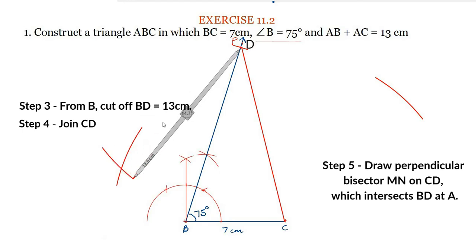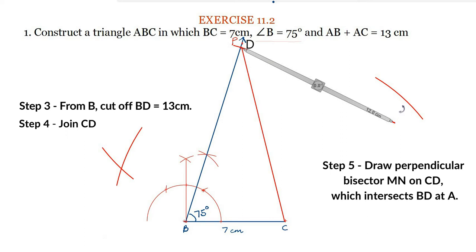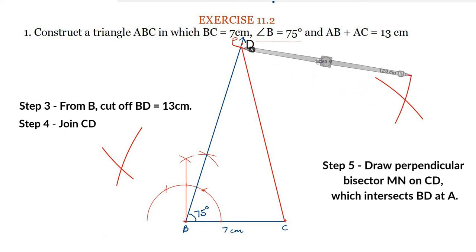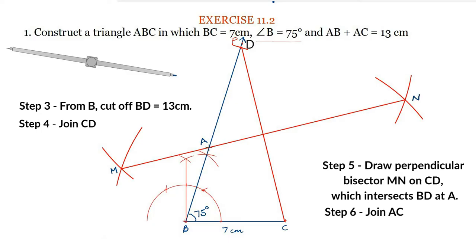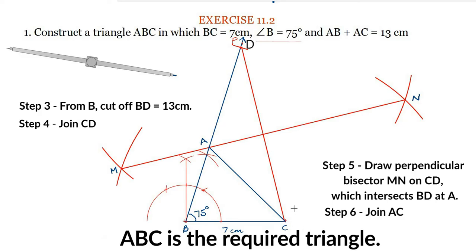To find point A, we will draw this perpendicular bisector, so that the point where this perpendicular bisector intersects the ray BP will be point A. Now this point is point A and the perpendicular bisector MN. Now join AC to get the required triangle.